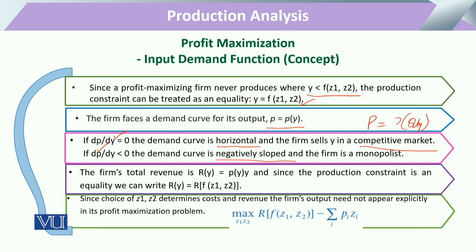Whenever we have to maximize revenue with reference to inputs, it will always be such that the maximization of revenue is tied to the cost of production for that amount of Q for which it was calculated. Similarly, this will be the maximization of revenue particularly related to the quantity produced. From this, we can derive demand functions — what will be the amount of Z1 and Z2 that gives maximum production, maximum profit, or maximum revenue.